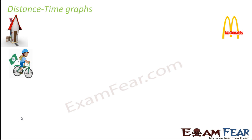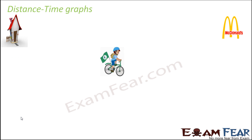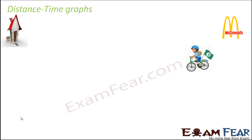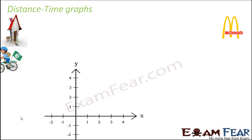Distance-time graphs are going to give us a lot of information about the motion of various objects. Let us look at an example where a little boy is travelling from his home to McDonald's and then coming back home. We represent this in a distance-time graph, with time on the x-axis and distance on the y-axis. The shape of the graph tells us a lot of things.